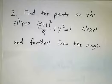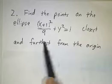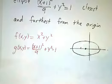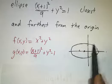We want to find the points on this ellipse that is closest and farthest from the origin. So the ellipse, it's an ellipse centered at x equals negative 1, y equals 0. So this is a picture of the ellipse.